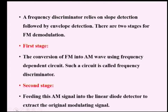A frequency discriminator is a demodulator that depends on slope detection followed by envelope detection. There are two stages for FM demodulation.